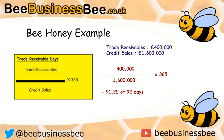Here is the answer. You should have taken your trade receivables of £400,000 and divided by your £1.6 million of credit sales, then multiplied by 365, giving you 91.25. Since you can't have 0.25 of a day, we round to 92 days. So it takes 92 days on average for customers to pay. If they were given 30 days credit, that's not very good; if given 90 days, it's not too bad, though we could still improve slightly.